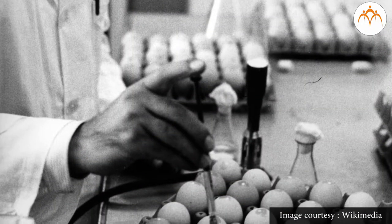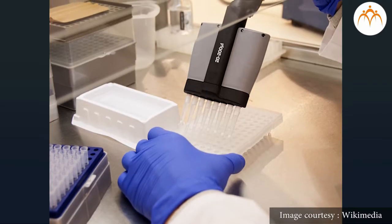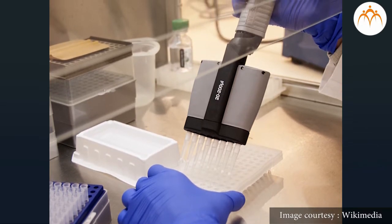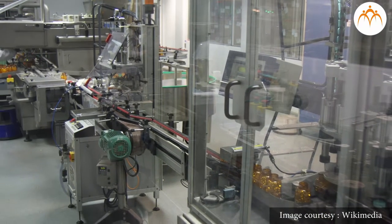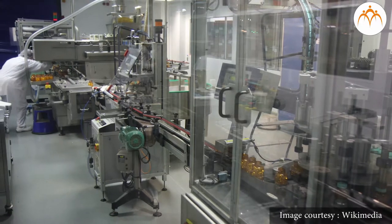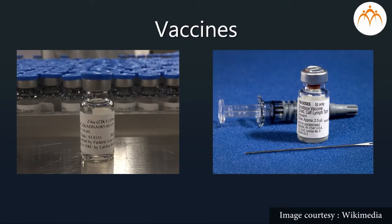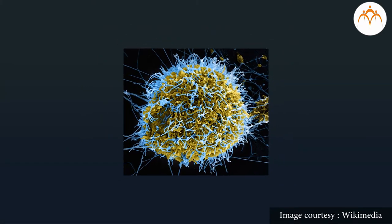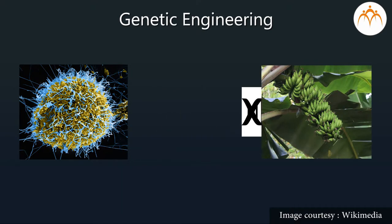With the help of genetic engineering, a safer alternative is possible. The gene responsible for antigen production in the pathogen is isolated and inserted into a non-pathogenic microorganism. Such genetically modified microorganisms can be grown safely on a large scale. The antigen produced by them can then be extracted, purified, and formulated into a vaccine. Similarly, the genes responsible for antigens from pathogens can also be engineered into plants that produce fruits and vegetables consumed raw by humans.